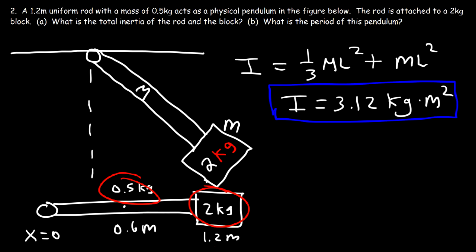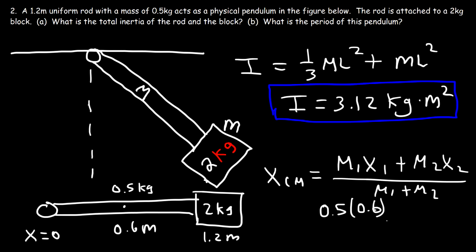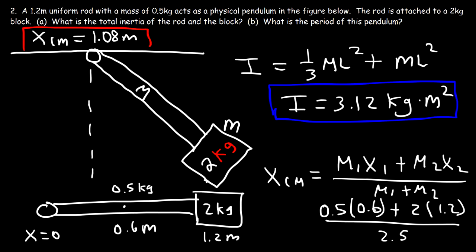So it should be between 0.9 and 1.2. To calculate, we use the center of mass equation: (m₁·x₁ + m₂·x₂) / (m₁ + m₂). The rod's mass is 0.5 at position 0.6, and the block's mass is 2 at position 1.2, with a total mass of 2.5 kilograms. So (0.5 × 0.6 + 2 × 1.2) / 2.5 gives us a center of mass position of 1.08 meters. That's the location of the center of mass for this pendulum.